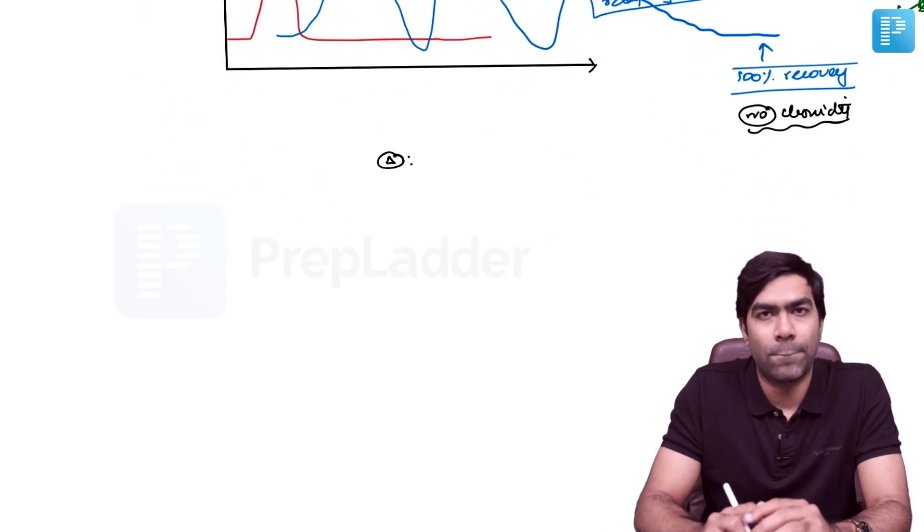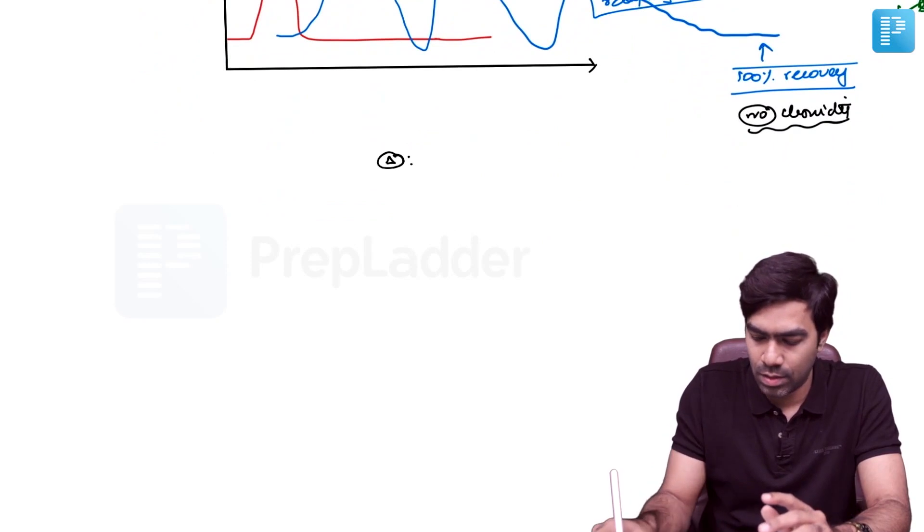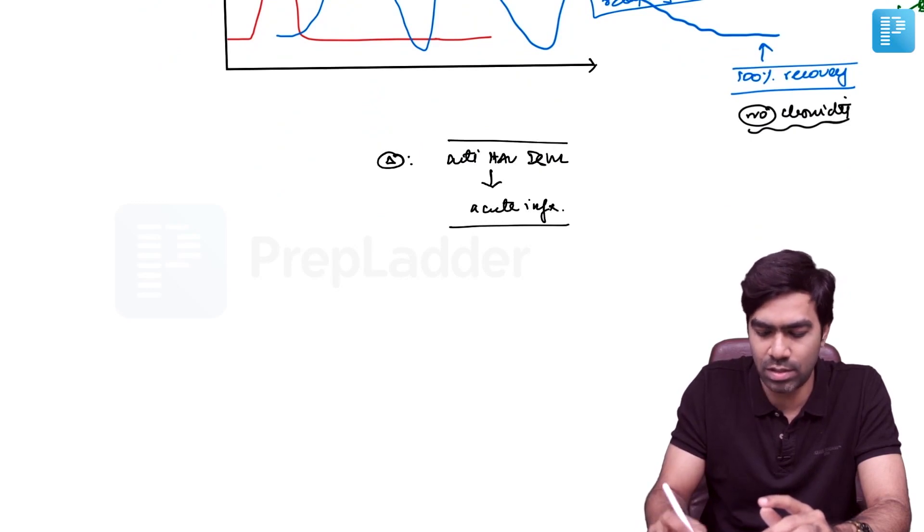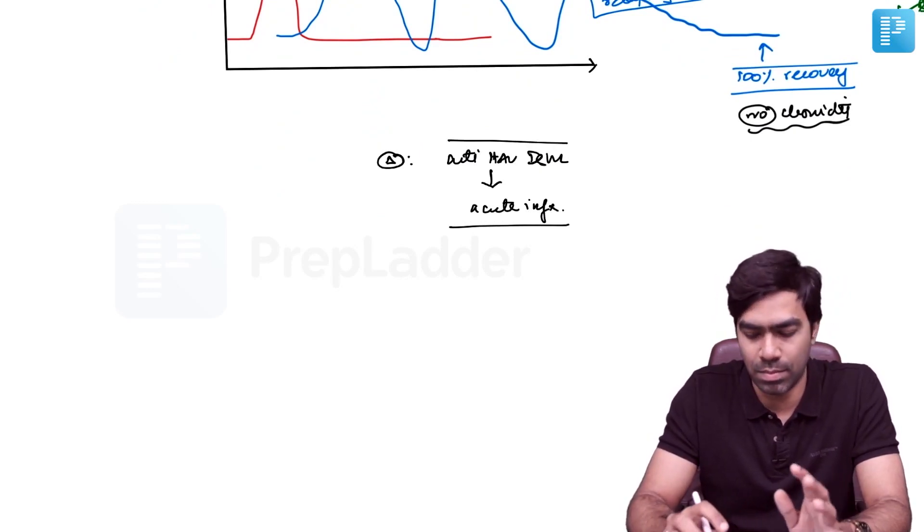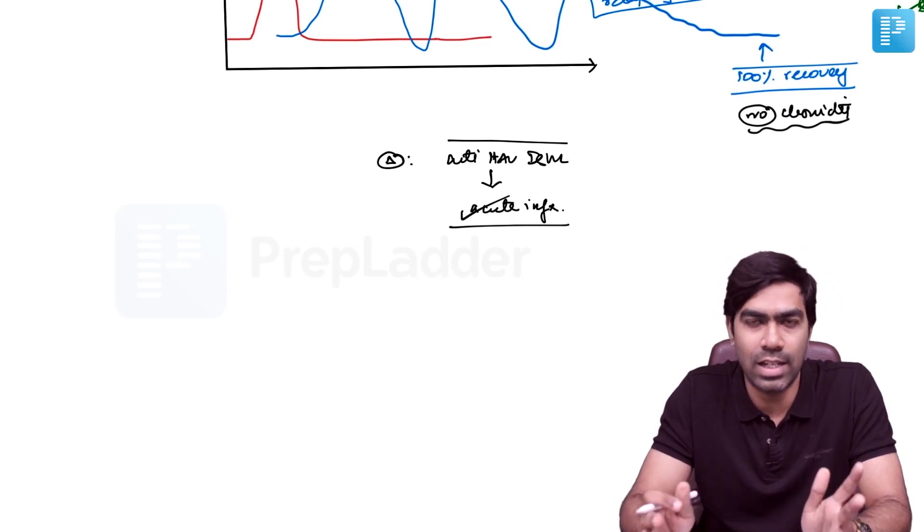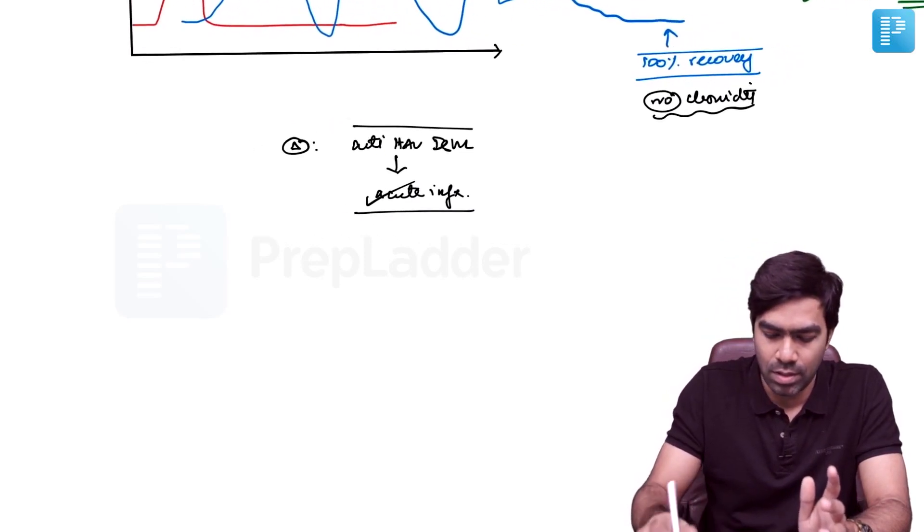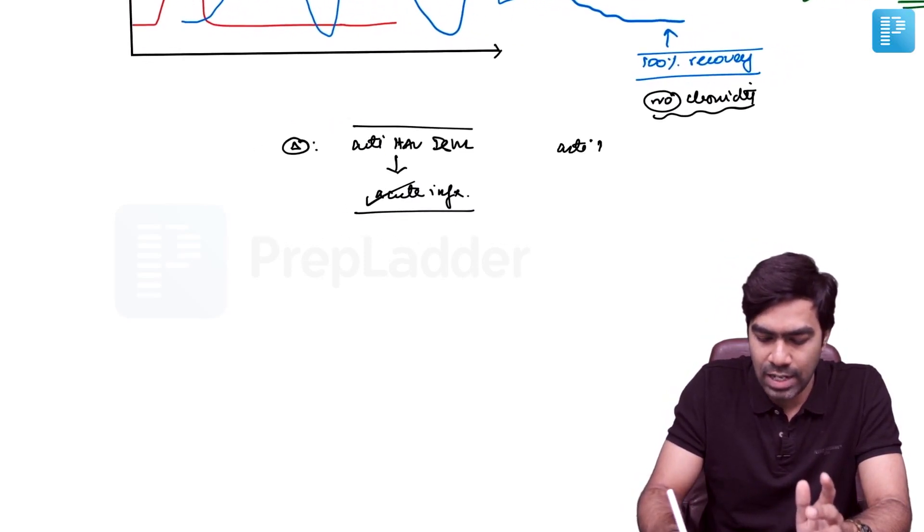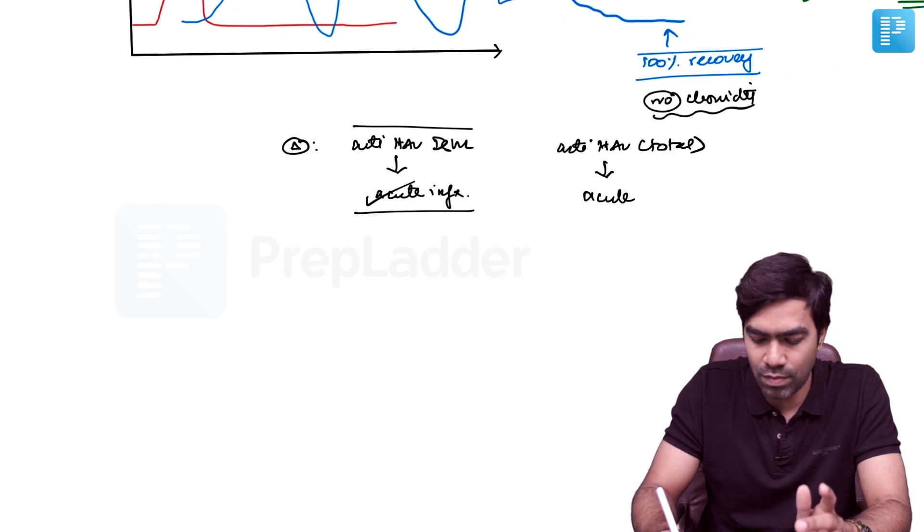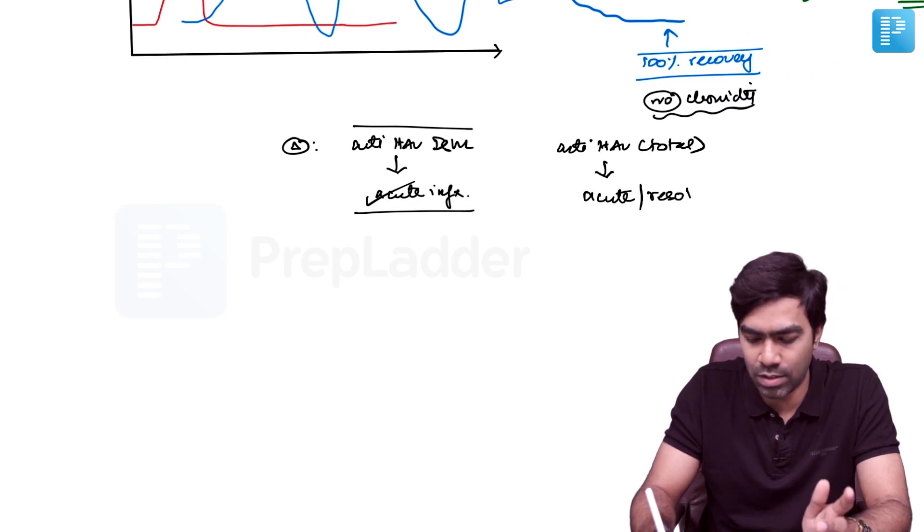How do you diagnose? Anti-HAV IgM is the way to go because this indicates acute infection. Persistence beyond six months indicates relapsing HAV, but typically for all acute infections, anti-HAV IgM is the key antibody. Next is anti-HAV total, which is not as important because it can indicate either acute or resolved infection.